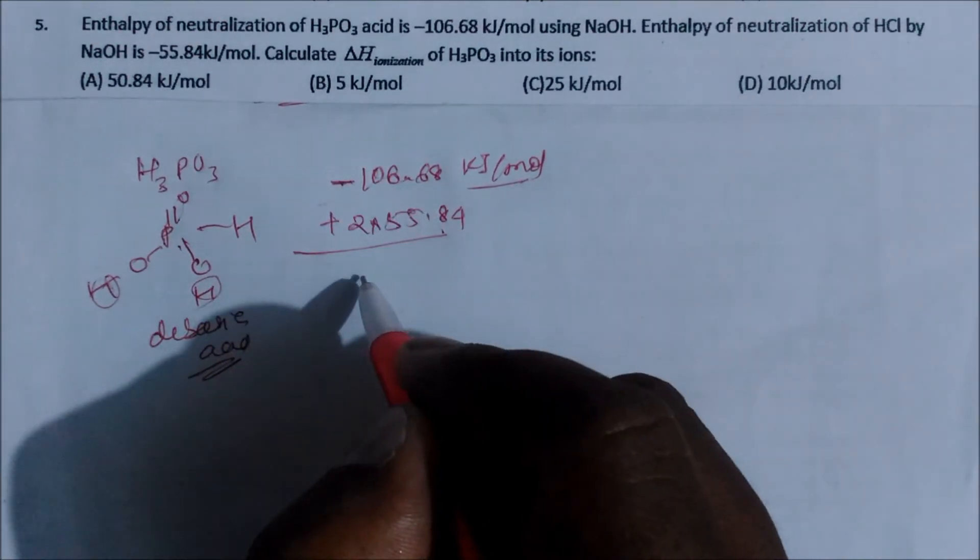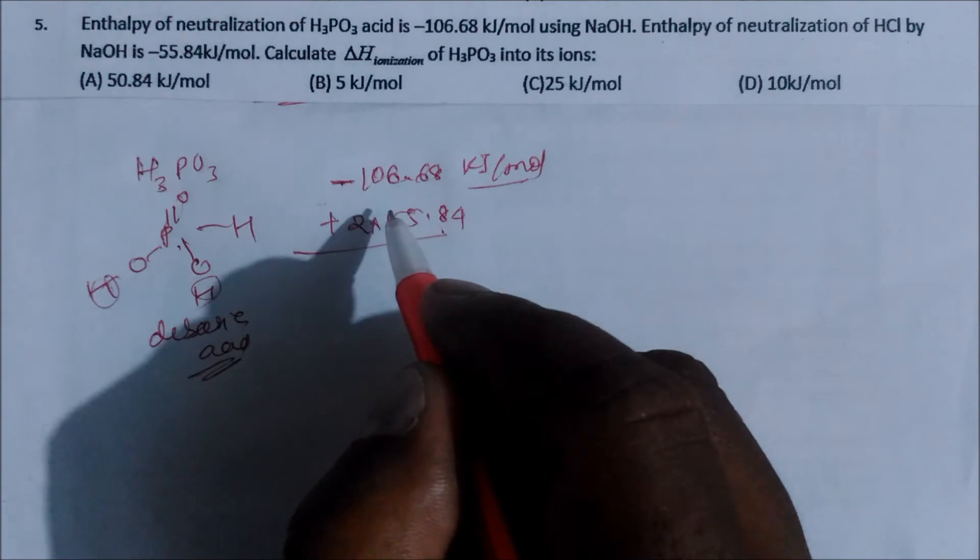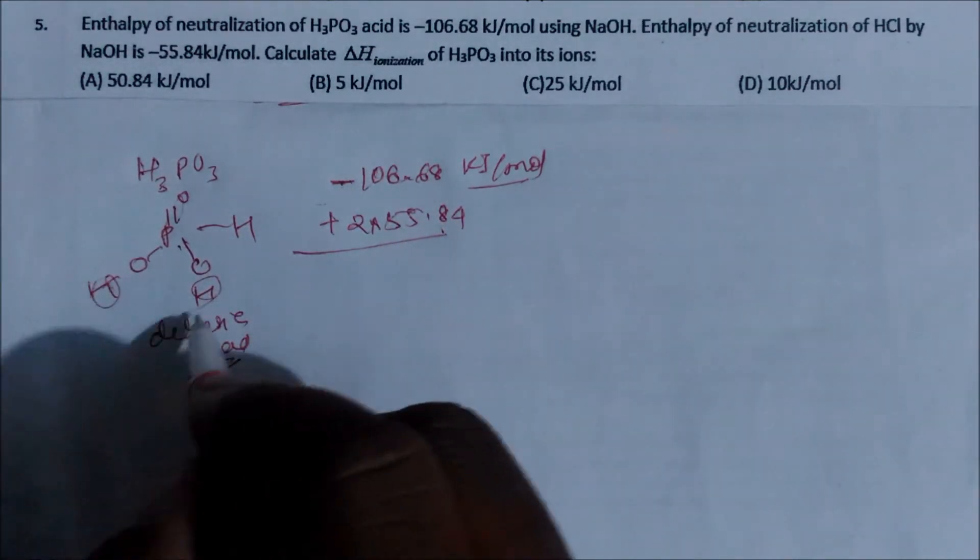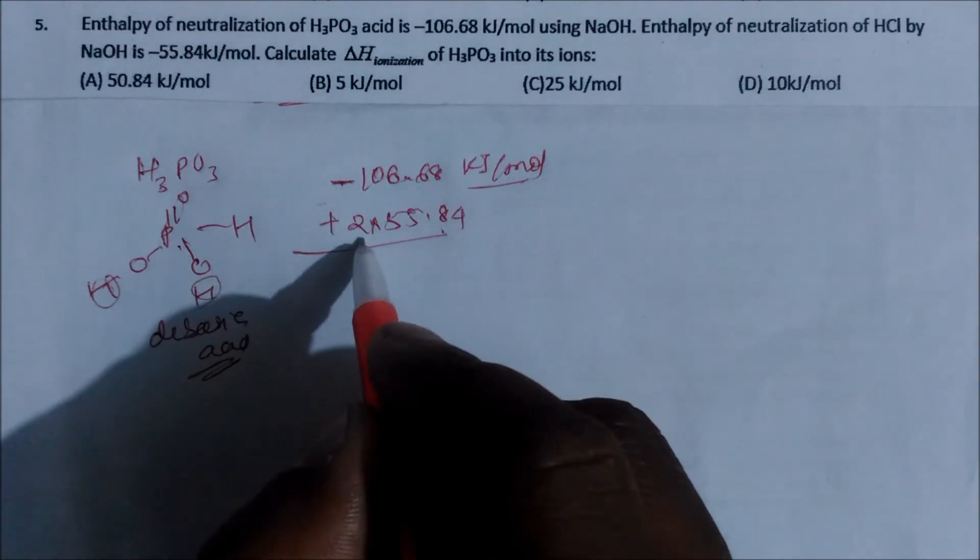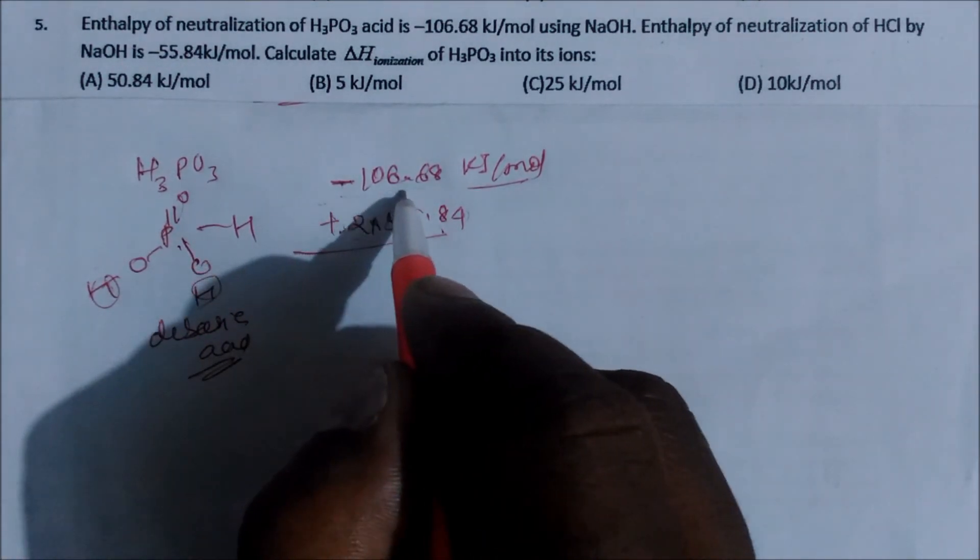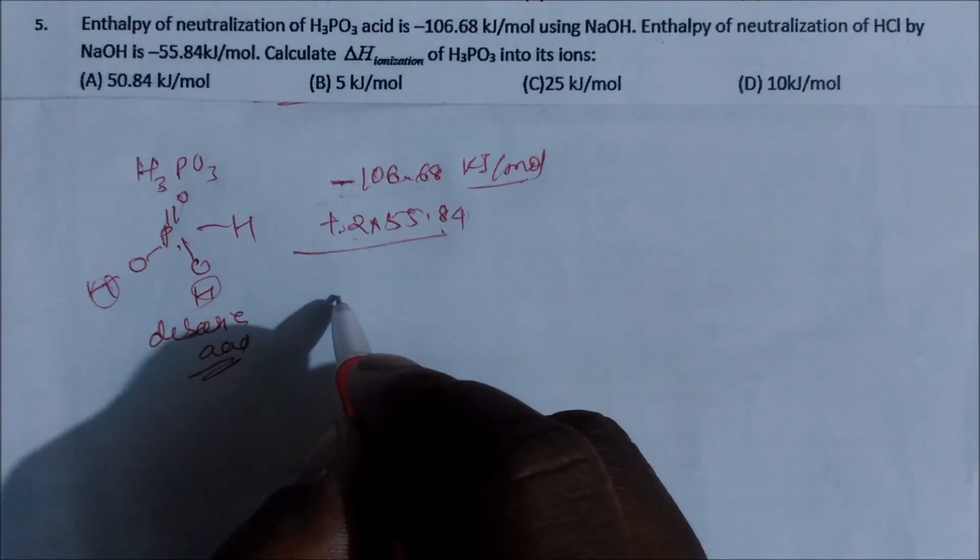And if you just solve it, how much energy is required? The difference of energy we require to dissociate. Because for the utilization, we require this much energy, and total utilization for this is 106.67. It means the remaining energy is converted to heat of ionization.